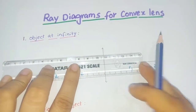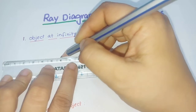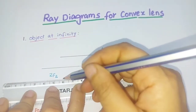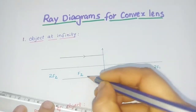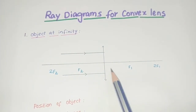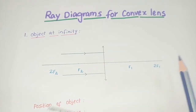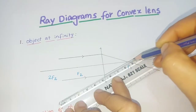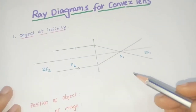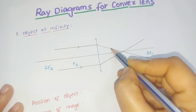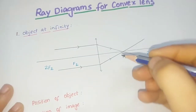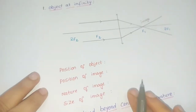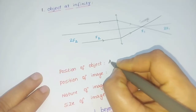When the object is at infinity, the light rays will be parallel to the principal axis. We are considering two light rays which are parallel to the principal axis. We know that light rays passing parallel to the principal axis will pass through the focus. So these two light rays will pass through the focus, and the point at which these two refracted rays meet is where the image is formed.